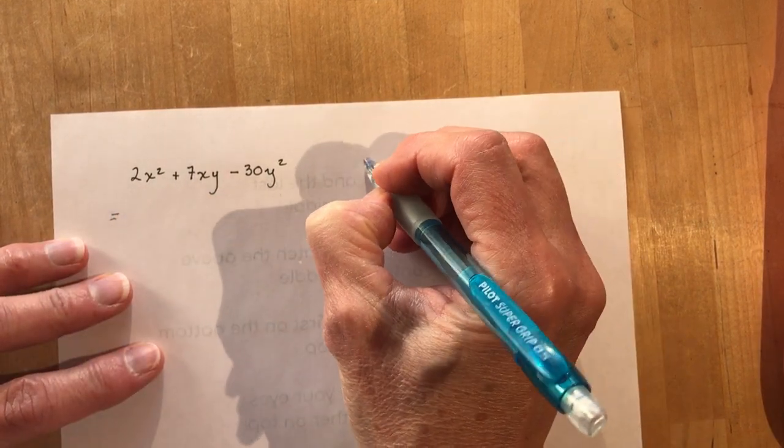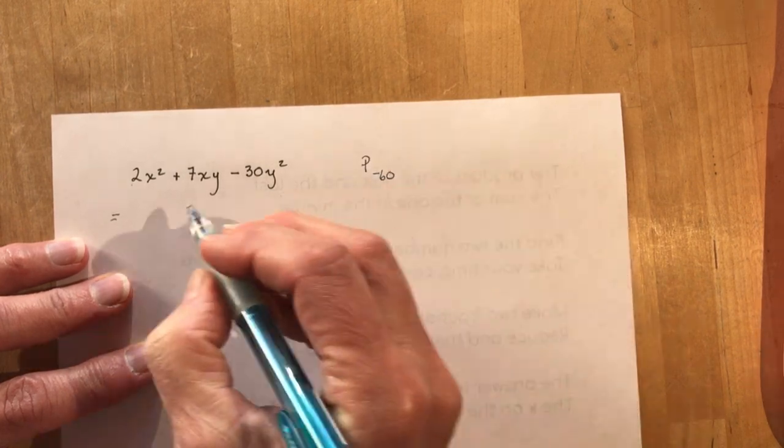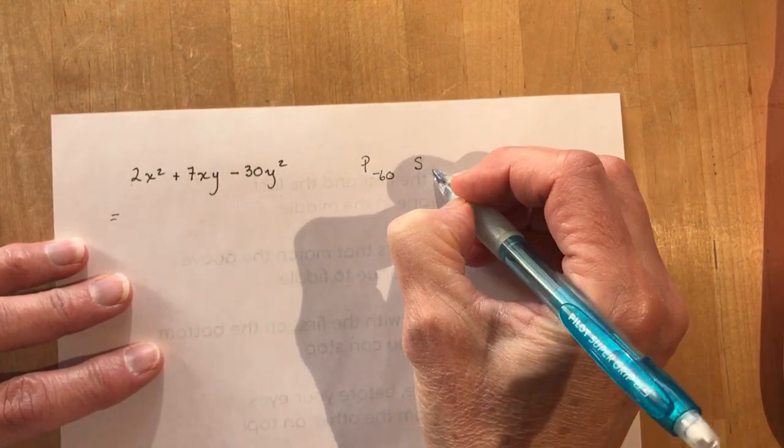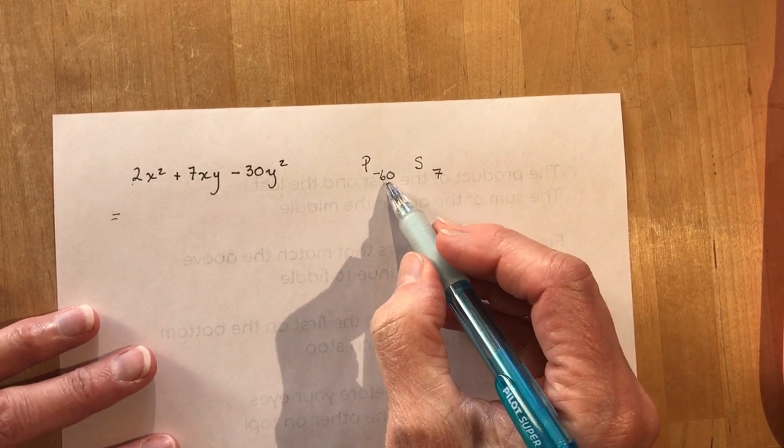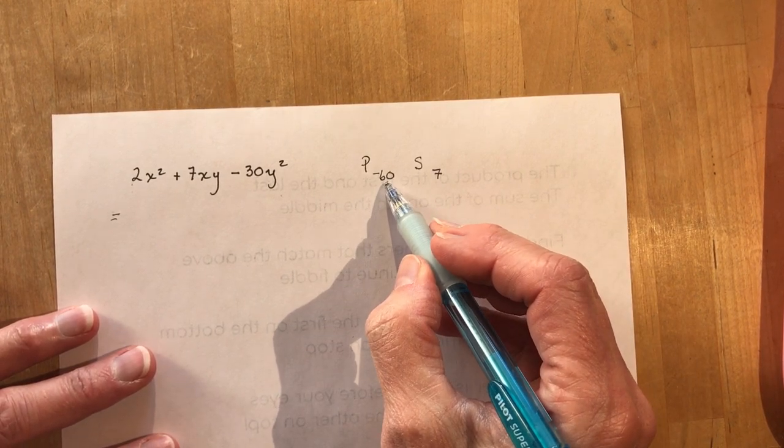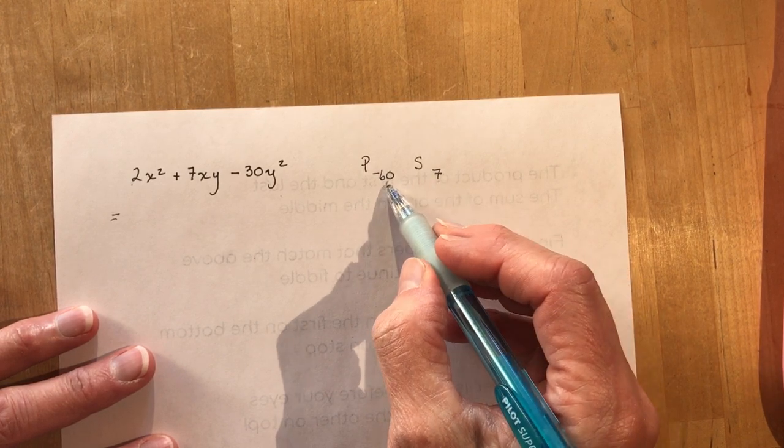Okay so I'm looking for a product of the first and the last minus 60. The sum of the one in the middle. Sum is 7. Now if you get stuck on these you can start working through factors of 60 so that you can figure out how am I going to get to 7.